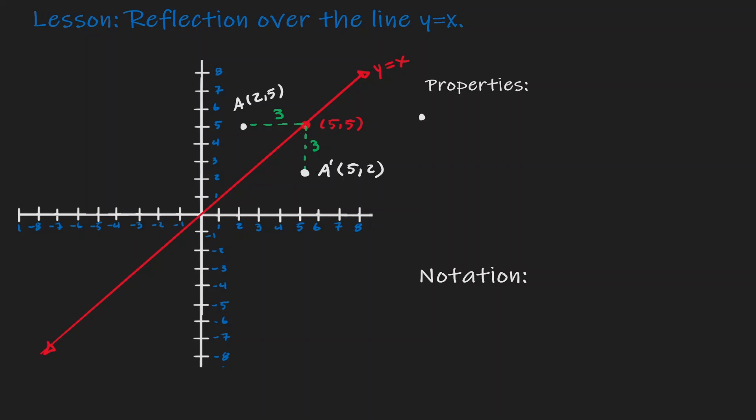Let's write down the property we have just used. Within the reflection over the line y equals x, the horizontal distance became a vertical distance.